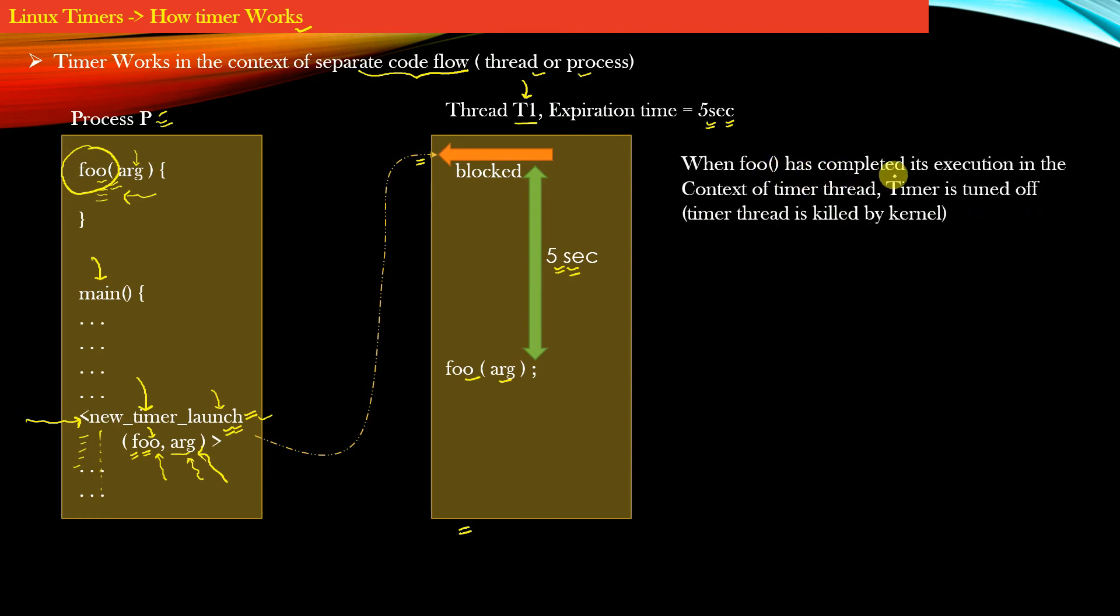So when foo has completed its execution in the context of the timer thread, timer is turned off. When I say that the timer is turned off, it means that the timer thread is killed by the kernel or operating system. So as soon as this function completes its execution and returns, the timer thread T1 is automatically killed by the kernel or operating system because the unit of work which was supposed to be done by the timer has completed.